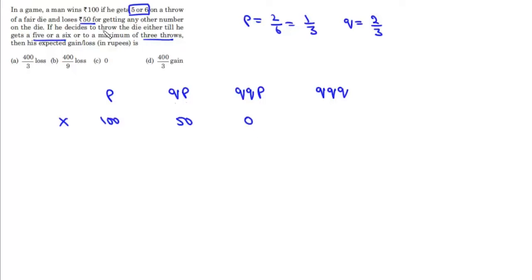Now 2 losses and 1 win. So value of x is 0 and then 3 losses will be minus 150 and their respective probabilities.